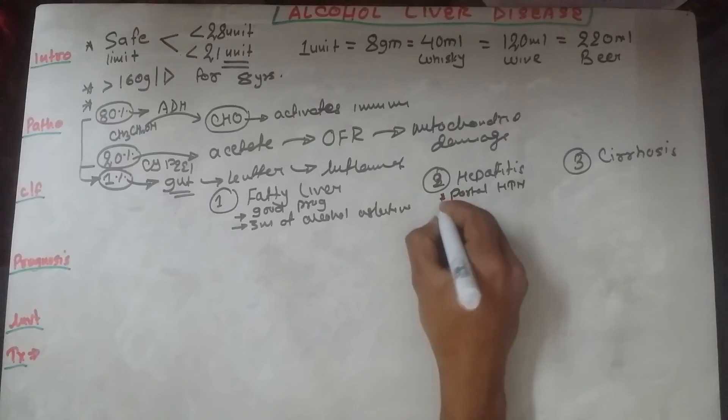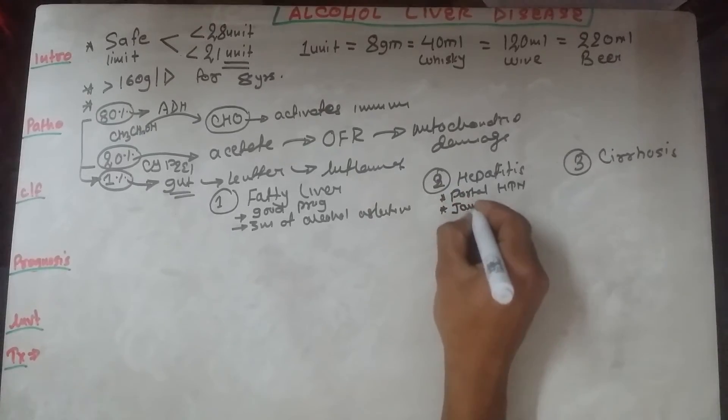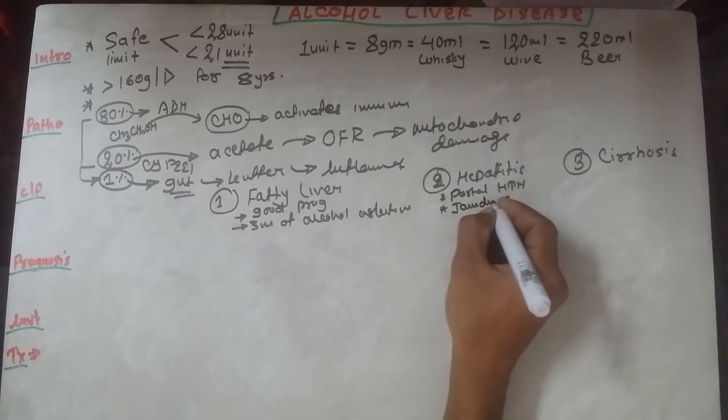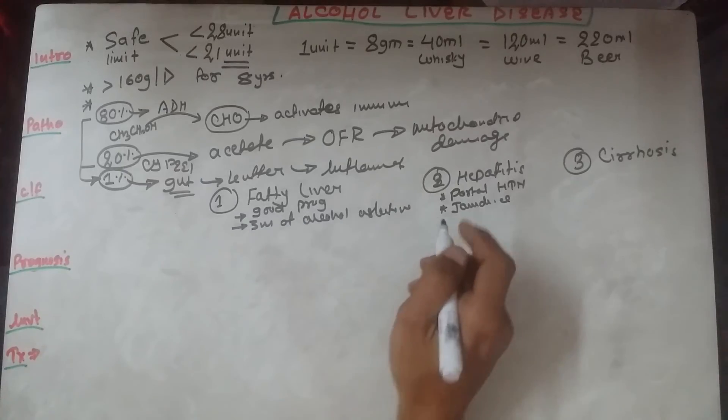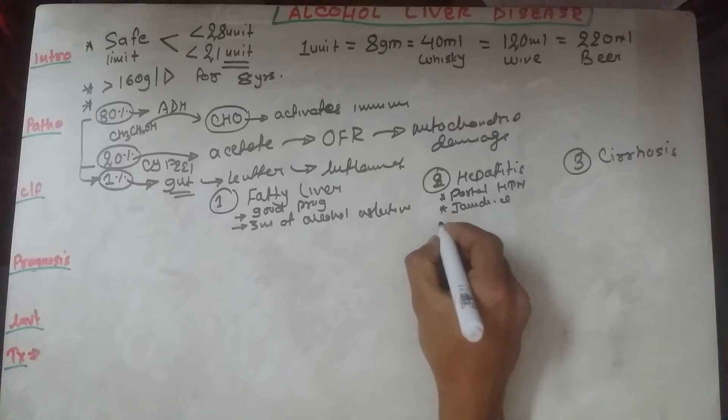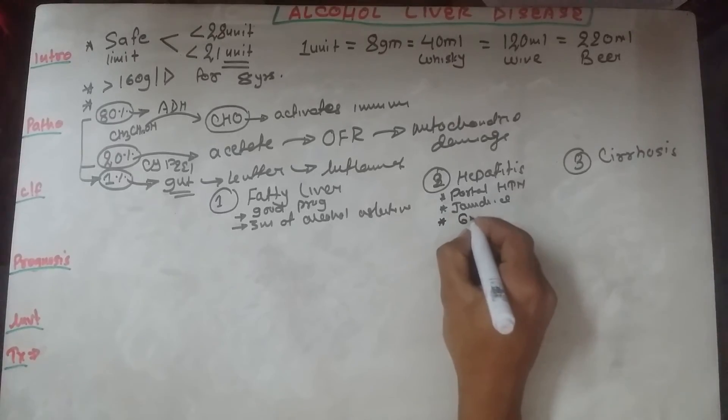They present with jaundice and have a bad prognosis relative to fatty liver disease. The patient with acute alcoholic hepatitis often deteriorates during the first one to three weeks, and the resolution period is about six months.